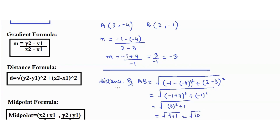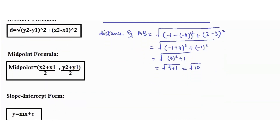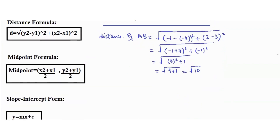That equals root 10, which is the distance of AB. That's how we use the distance formula. Next, we move on to the midpoint.